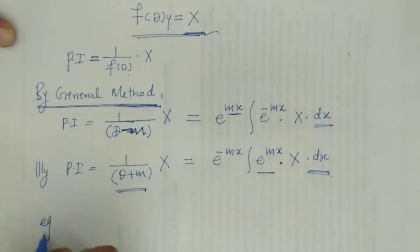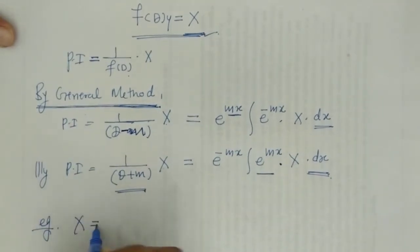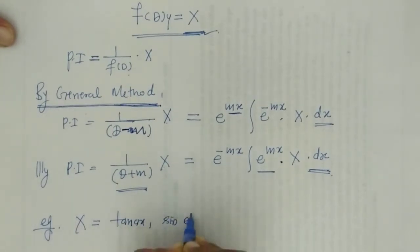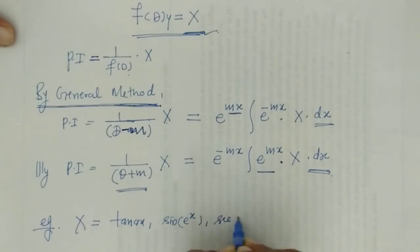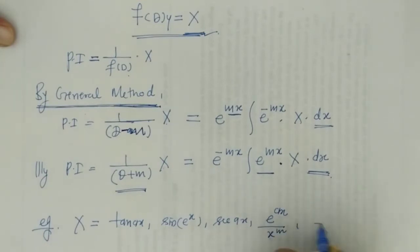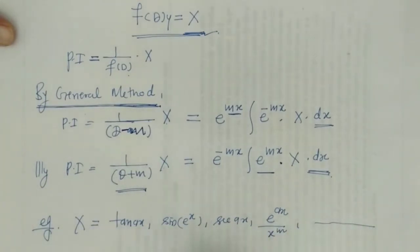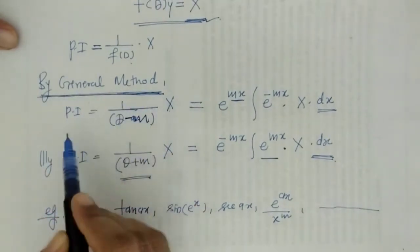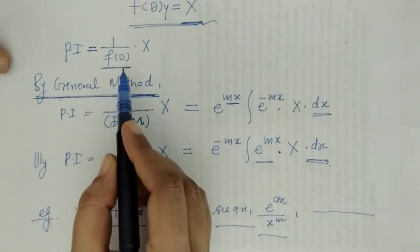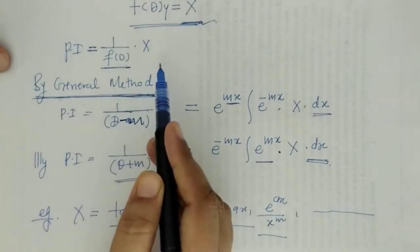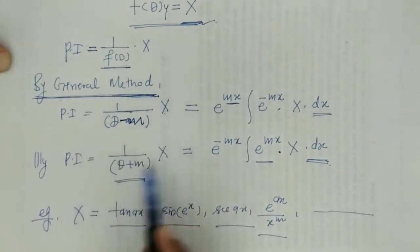This general method formula can be applied when X is of types such as tan(ax), sin(e raised to x), sec(ax), or e raised to ax upon x raised to m. When X is of this type, we have to apply the general method for finding PI. We must note that f(D) should be reducible into linear factors, only then can we apply this general method.